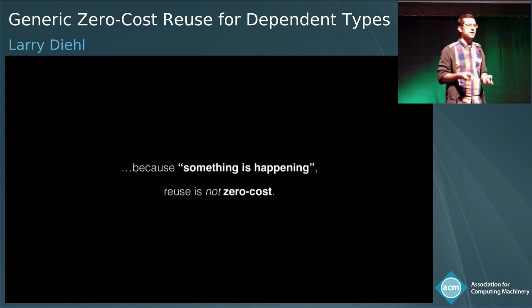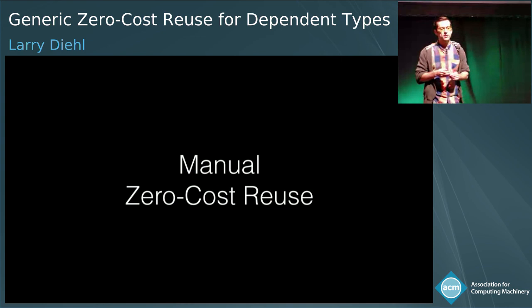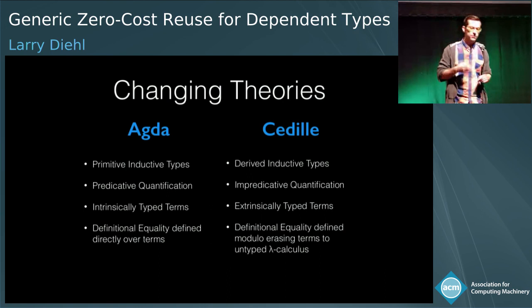Because something is happening, although we can achieve reuse in Agda, it's not zero cost. Even though we can get a version of list append defined in terms of vector append, internally it's doing these linear time conversions back and forth between lists and vectors, so we pay a performance penalty. To get rid of this, we're going to talk about manual zero-cost reuse and move to a theory where our intuition that nothing is happening is actually true—the theory behind the dependently typed language Cedille, which was recently open sourced.